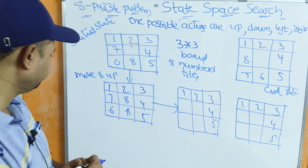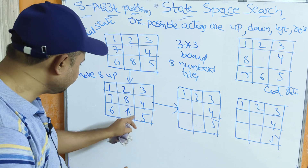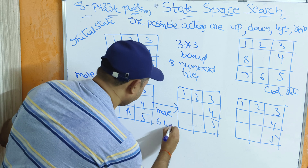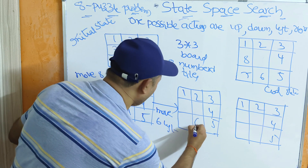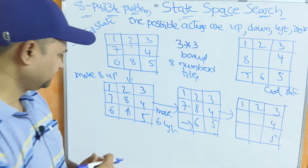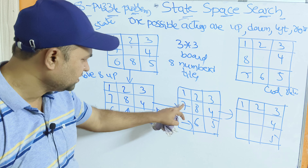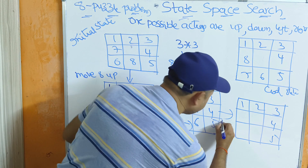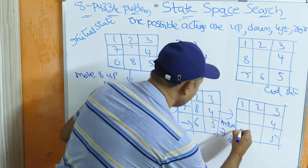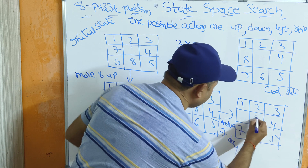Second action: the current empty tile allows us to move tile 6 left — so tile 6 is moved left. Third action: now move tile 7 down. The next two tiles remain the same.